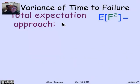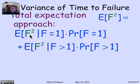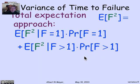Using total expectation: E[F²] equals the expectation of F² given F=1, times the probability that F=1, plus the expectation of F² given F>1, times the probability that F>1. What makes this manageable is that the conditional expectation E[F² | F>1] can be easily converted to a non-conditional probability. The key lemma is that for any function g of the mean time to failure, E[g(F) | F>n] equals E[g(F+n)].